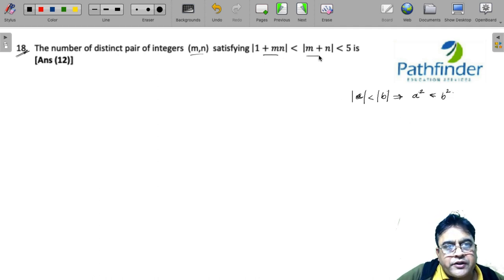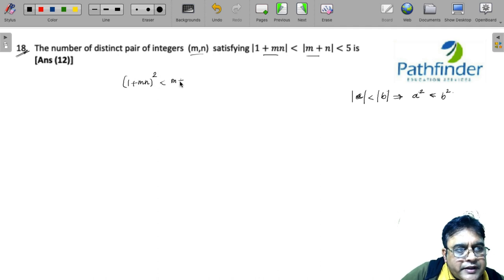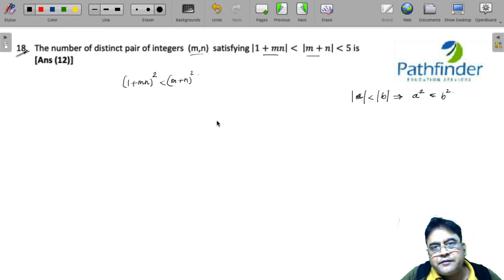Applying this concept, we have (1+mn)² < (m+n)². That is the first thing we will do. It is a beautiful question.